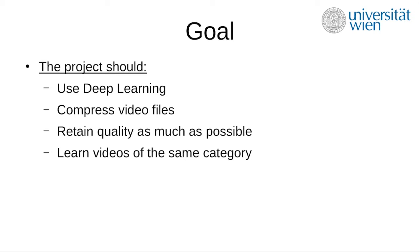The AI should be trained on a set of videos that are in the same category. For example, it should be able to learn and reconstruct face videos or tai chi movements. It can even learn how a robot arm functions and moves, and other things like dance moves.